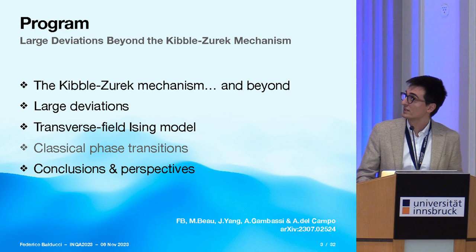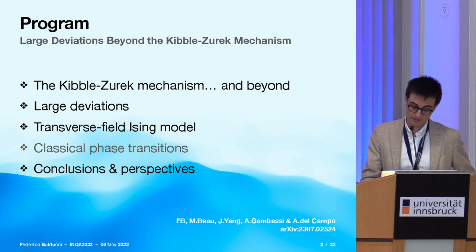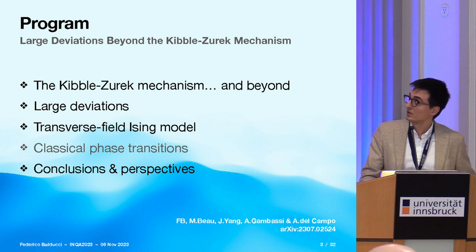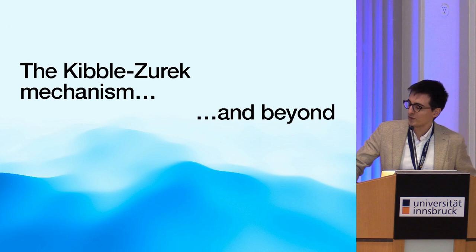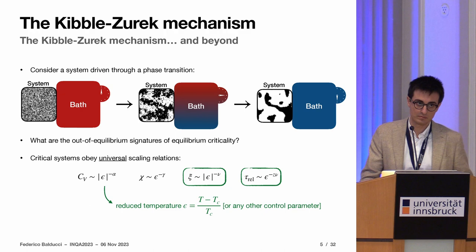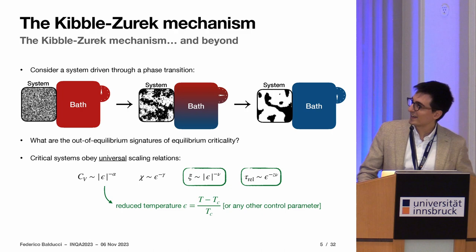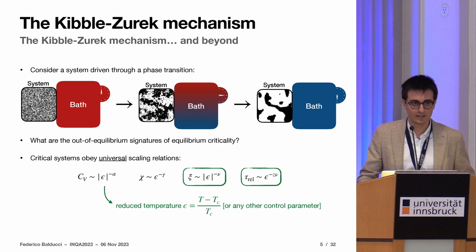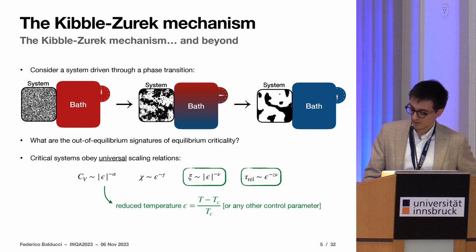I will try to motivate why the Kibble-Zurek mechanism is interesting and what one can expect beyond the prediction of the mechanism itself. To do that I will argue that large deviations theory is a good theoretical tool to be used. I will use as an example the transverse field Ising model because it's exactly solvable, so there is a lot of control on the equations, but the structure will be the same also for other types of phase transitions which are not exactly solvable.